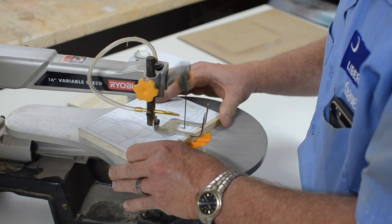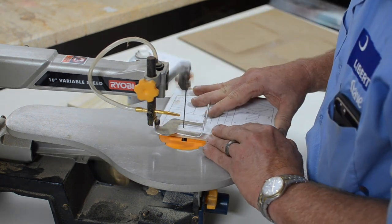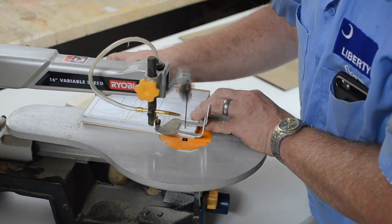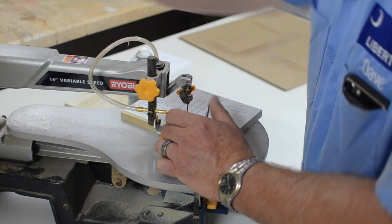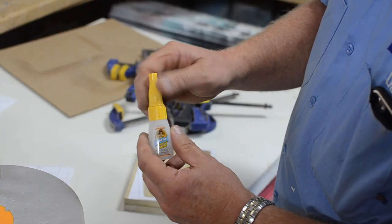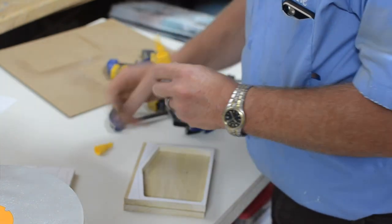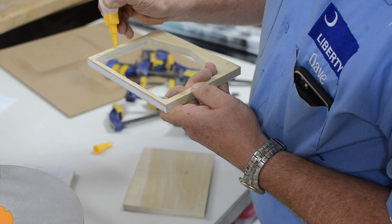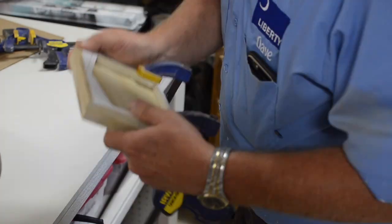He first started by cutting the manger part out. Once it was cut out, he used Gorilla Glue to hold it to the back piece, and then he clamped it into place until it was dry.